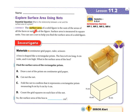Let's connect. The surface area of a solid figure is the sum of the areas of all the faces or surfaces of the figure. Surface area is measured in square units. You can use a net to help you find the surface area — it's the area of this side, that side, the one underneath, the one on the other side, this one, and that one. So you have to add them all up.